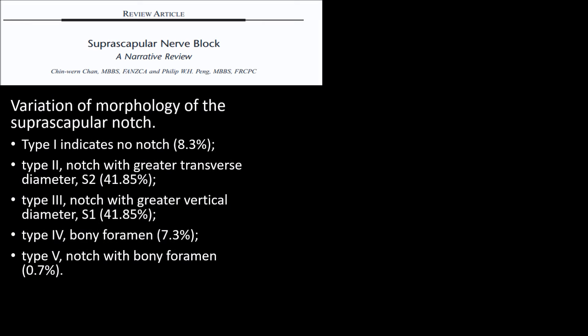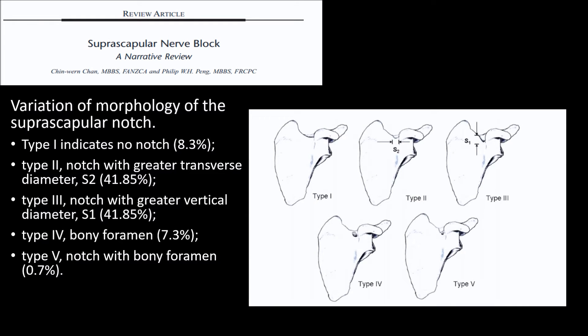The classical approach to the suprascapular nerve block is the posterior approach in the supraspinous fossa, using the suprascapular notch as the ultrasound landmark. However, from a narrative review by Chen et al., the suprascapular notch cannot be seen in up to 15 percent of patients, where there can be no notch at all or the notch may be a foramen — making the ultrasound landmark unreliable.